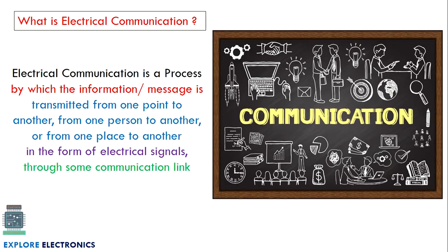We need to understand what electrical communication is. Electrical communication is a process by which information or a message is transmitted from one point to another, from one person to another, or from one place to another, in the form of electrical signals through some communication link. Communication is a process where we transmit information from one place to another through electrical signals, and we need a communication link in between.